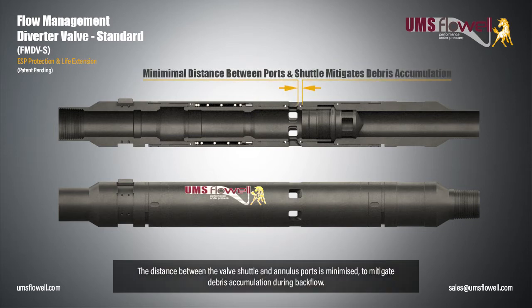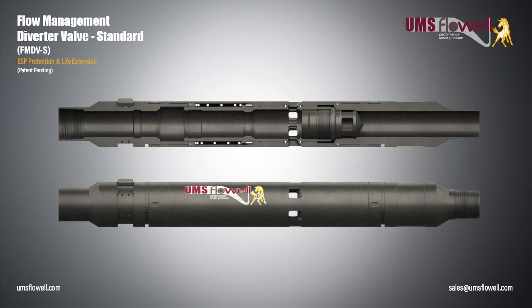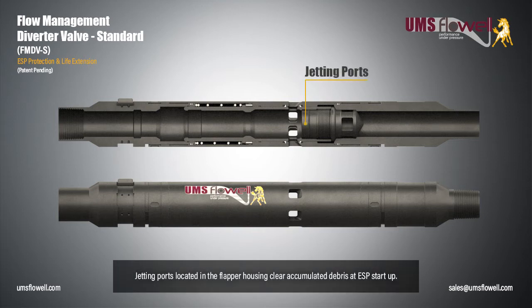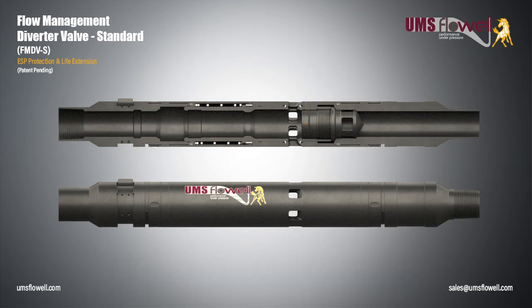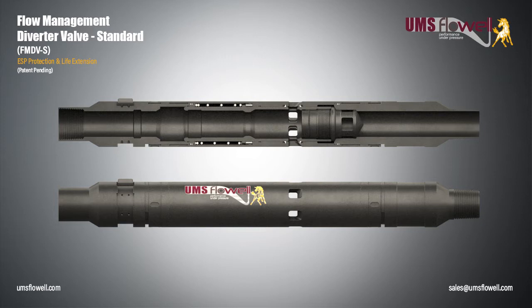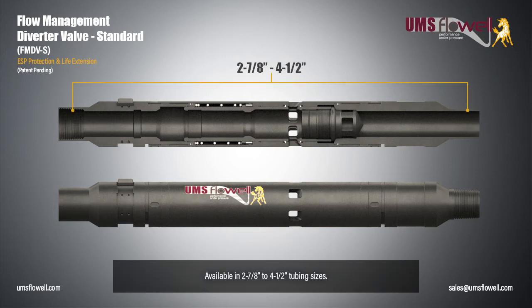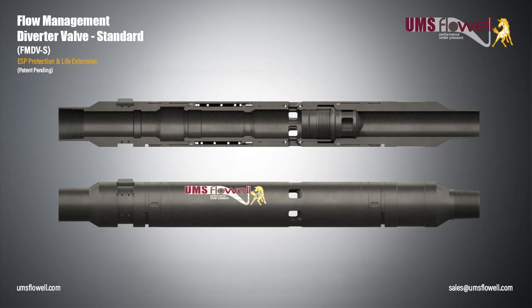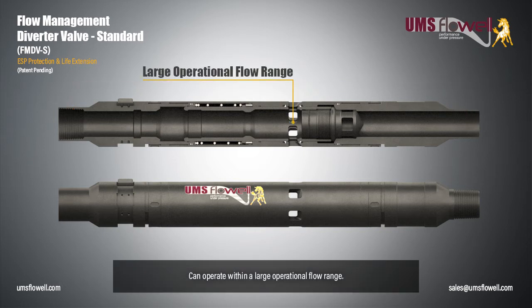The distance between the valve shuttle and annulus ports is minimized to mitigate debris accumulation during backflow. Jetting ports located in the flapper housing clear accumulated debris at ESP startup. An internal profile allows a shifting tool to either lock the valve open or exercise the valve. Available in 2 and 7/8 inch to 4 and 1/2 inch tubing sizes. Can operate within a large operational flow range.